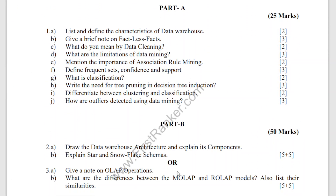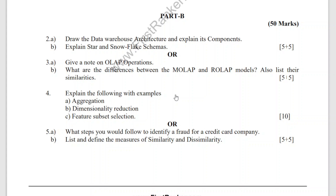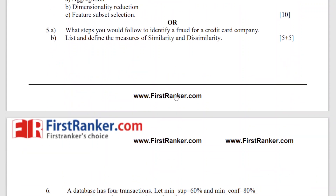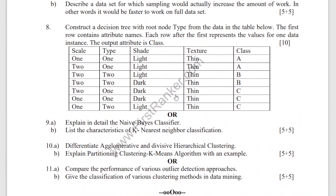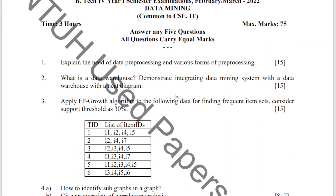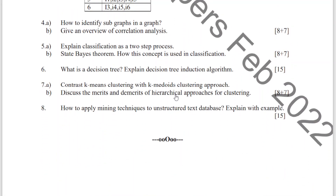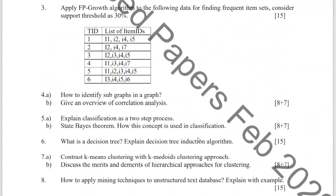Also focus on the short answer questions — these are very easy and important. If you try to answer these questions, you may get 25 marks very easily, and the rest of the 50 marks you can also score well. Mostly all are repeated questions — K-nearest neighbor, Apriori algorithm, Naive Bayes theorem, decision tree, text mining, web mining, K-medoids, K-means, graph mining, and correlation analysis are all completely repeated questions from the previous question papers.